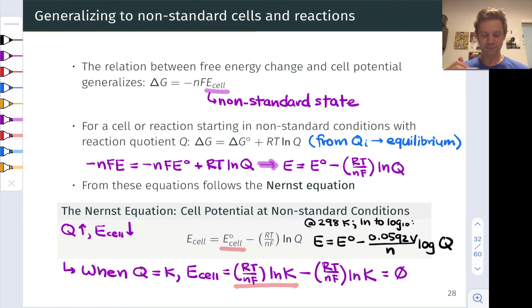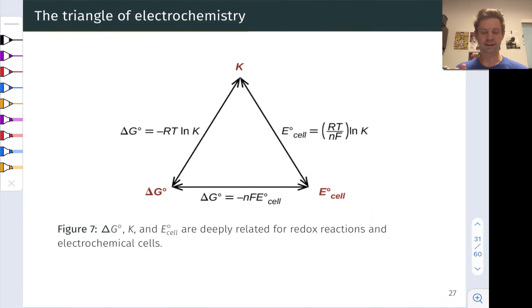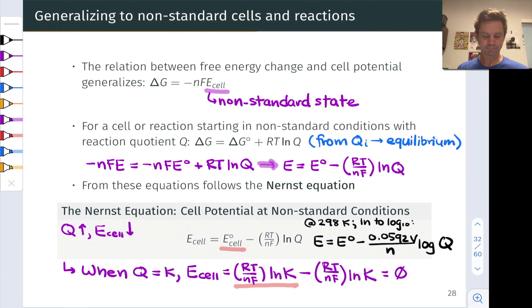So this first term comes from the standard cell potential which is related to the natural log of K as we saw on the triangle previously. That's this relation on kind of the right side of the triangle here. And the second term comes from the Nernst equation and the natural log of Q term built into the Nernst equation.